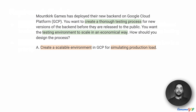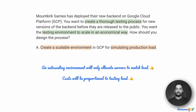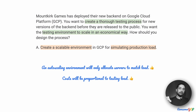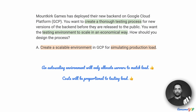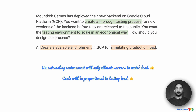Option A suggests that we create a scalable environment in GCP for simulating production load. A scalable environment basically means that when the load increases, the capacity increases. So if you're testing for a hundred users, maybe one VM is enough. If you're testing for a million, maybe you need hundreds of VMs and therefore it will automatically scale to that. This still gives us the ability to simulate production behavior — when there are a large number of users, there should be a large number of VMs. An auto-scaling environment will only allocate servers to match the load, which is good for us.